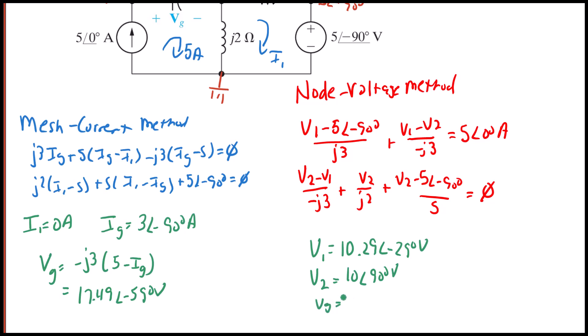VG is equal to V1 minus V2. And it should be the same as what we got before, and it is. It's 17.49 with an angle of negative 59 degrees.